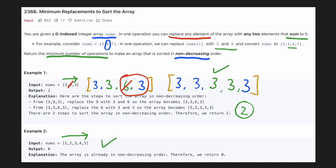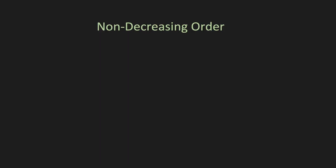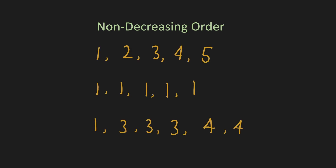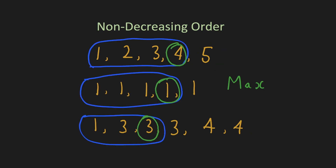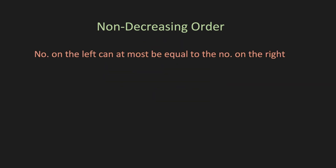Let's try to come up with an intuitive solution. Let's first look at some properties of an array in non-decreasing order. We can observe that in each case the last element of the array will be the maximum. Similarly, if we take any subarray starting from the left, the rightmost element will be the maximum of it. So for any two elements in the array, the left element can at most be equal to the element on the right.